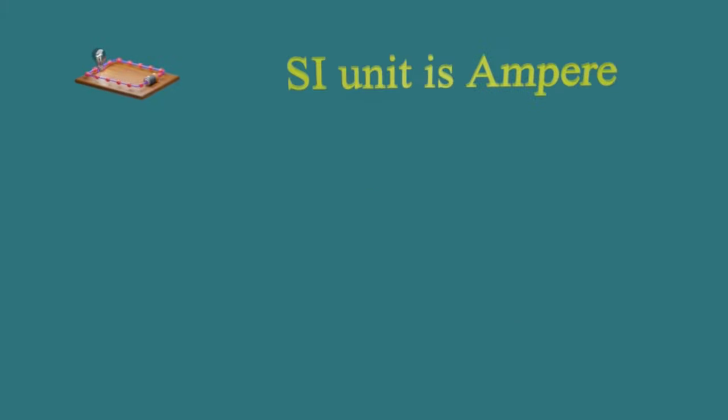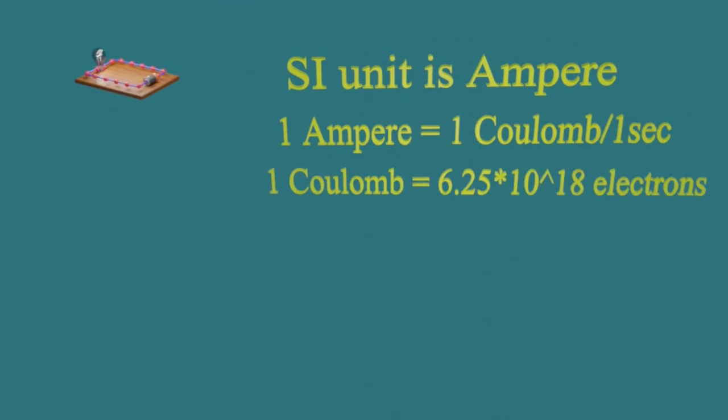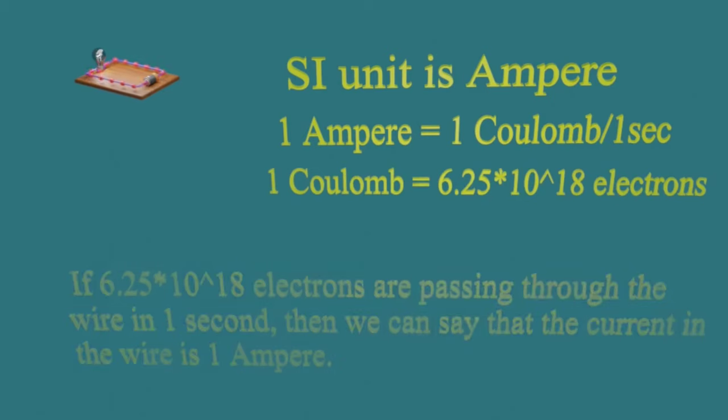The SI unit of current is ampere. One ampere equals to one coulomb per one second. Here coulomb is the unit of charge. One coulomb equals to the charge of 6.25 into 10 power 18 electrons. So if 6.25 into 10 power 18 electrons are passing through the wire in one second, then we can say that the current in the wire is 1 ampere.